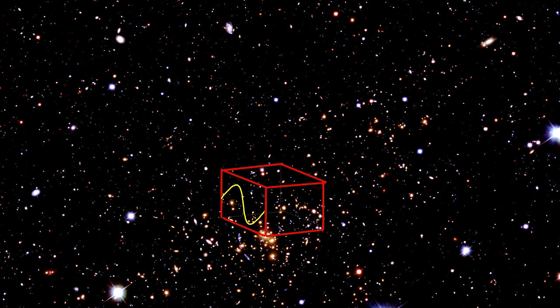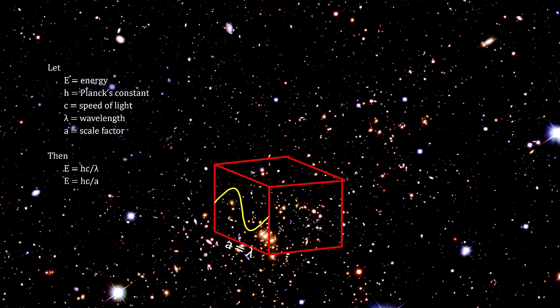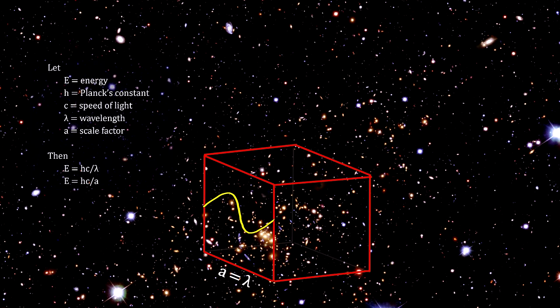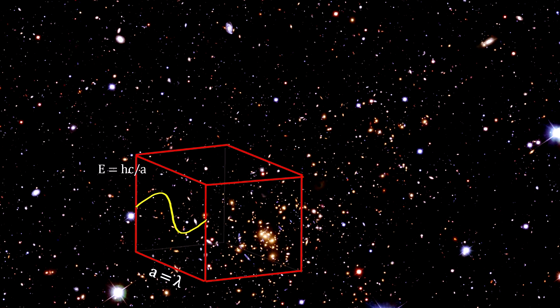Unlike matter that moves through space, photons are attached to the space they propagate through. So an expanding space will impact photons in a way that does not affect matter. Here's a cubic volume of space with a photon inside. The photon's wavelength, lambda, is equal to the length of the cube, A. Its energy is equal to Planck's constant times the speed of light divided by the wavelength. As the wavelength increases with an increase in the scale factor, the energy decreases. Unlike matter, where it remained constant. We see that the energy density also depends on the scale factor.